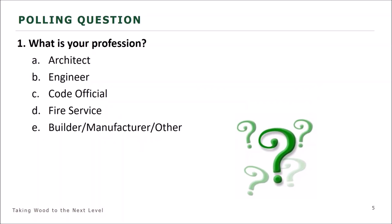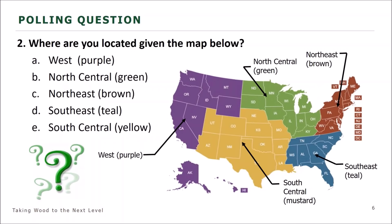It looks like we've got a large concentration of engineers. Now we have one more poll — this poll we're interested to find out where you're located throughout the U.S. We have the color-coded regions: West in purple, North Central in green, Northeast in brown, Southeast in teal, and South Central in yellow. Alaska and Hawaii are also on the West. Unfortunately we're limited to five poll answers, otherwise we would have added outside the U.S.